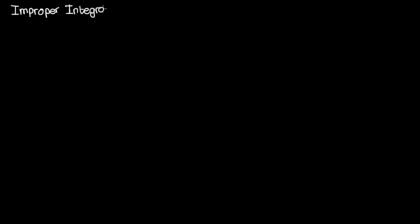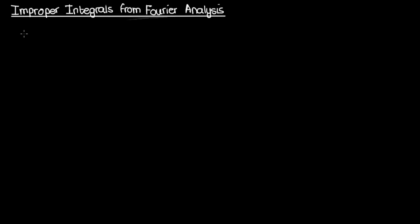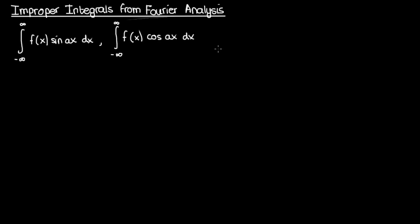Greetings students and welcome back to another video on complex variables. In this lesson we're going to learn how to compute improper integrals that come from Fourier analysis — specifically integrals of the form the integral from negative infinity to infinity of f(x) times sine(ax) dx, and the integral from negative infinity to infinity of f(x) times cosine(ax) dx, where a is some positive real number.